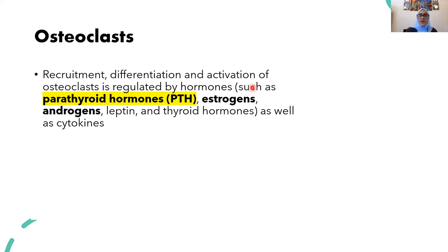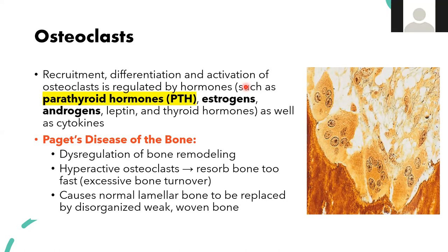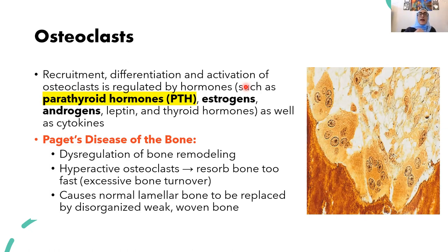A defect in osteoclasts causes Paget's disease of the bone. In this condition, osteoclasts become hyperactive — they resorb too much bone too fast. The osteoblasts try to keep up and replace the eaten bone, but they cannot. The result is that the bone formed is weak, immature woven bone that is disorganized and not structurally sound. The hyperactivity of osteoclasts ruins the entire structure of the bone — instead of lamellar bone, you get woven bone.